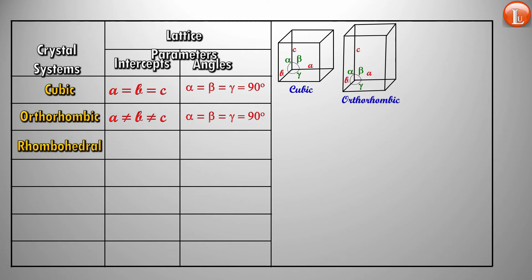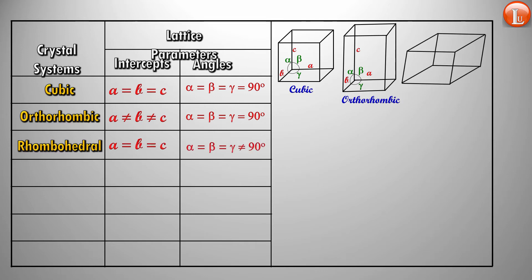The next is rhombohedral. All three sides are equal, and all three angles are equal, but the angles are not 90 degrees — they can be any other angle. That's rhombohedral for you.